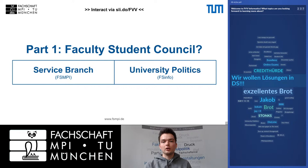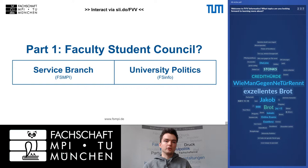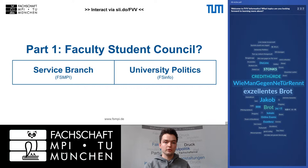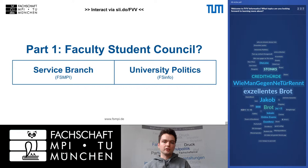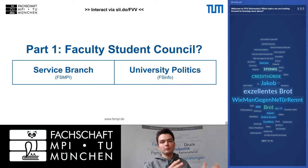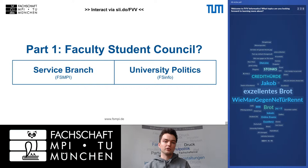About the structure of the local Student Council at the Informatics Department: we have two different branches. The Service Branch provides services for students and organizes events. The University Politics Branch works together with the department in various committees to represent student interests. The Service Branch is organized together with the Mathematics and Physics Department, while the University Politics Branch is only Informatics.